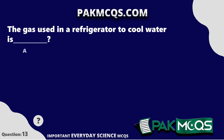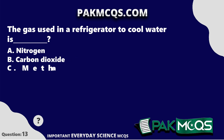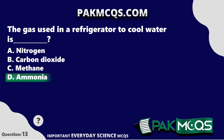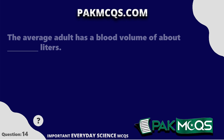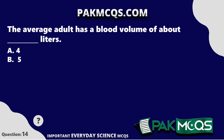The gas used in a refrigerator to cool water is Ammonia. The average adult has a blood volume of about 5 liters.